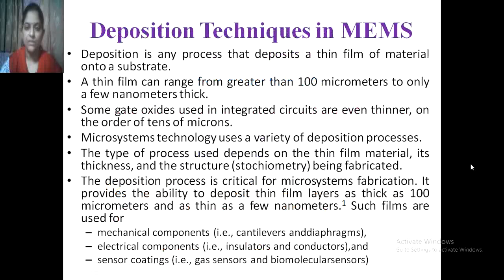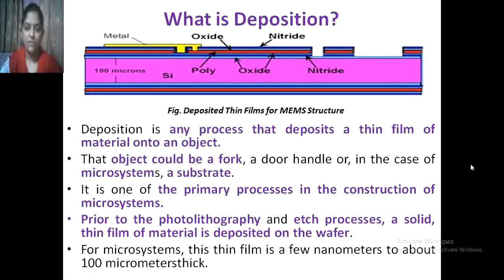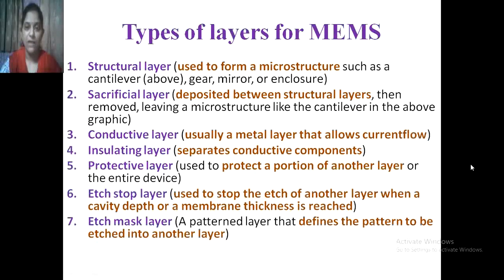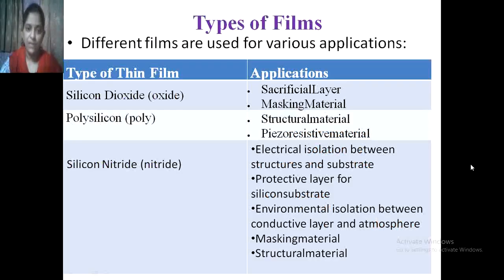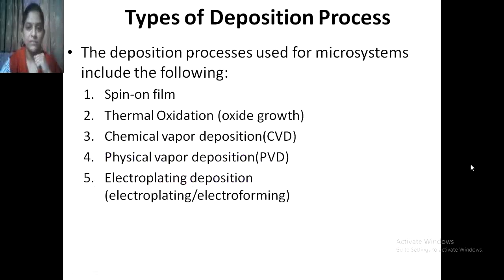In this chapter we have seen deposition techniques, an example of deposition in film, what is meant by deposition, why a deposition layer is required, the types of deposition layer, types of fields with respect to applications, one example of a four-layer micro-cantilever sensor, and the detailed types of deposition process.